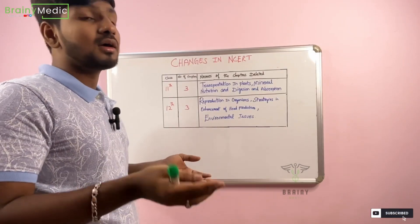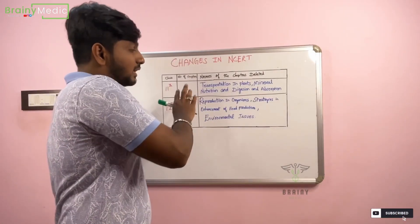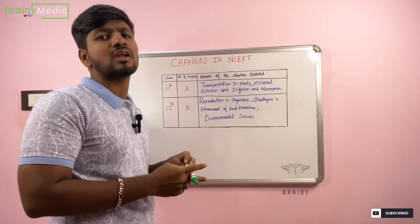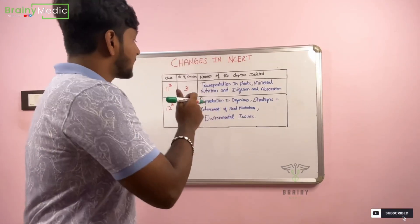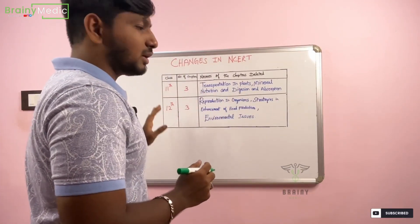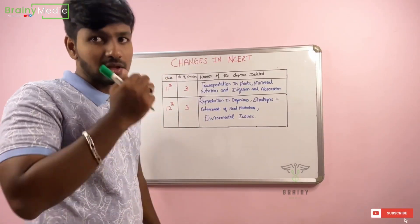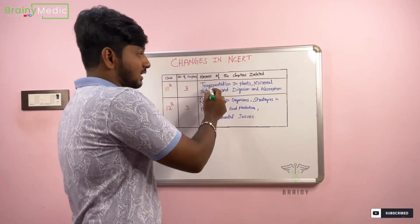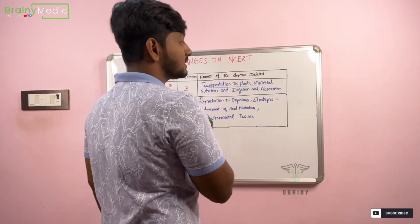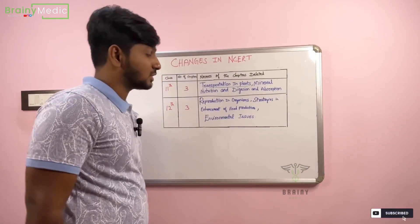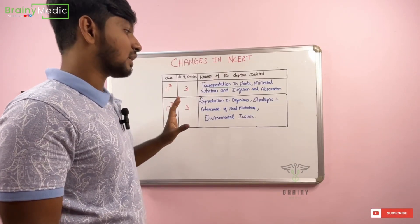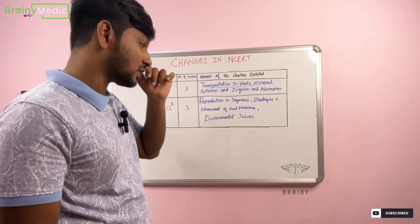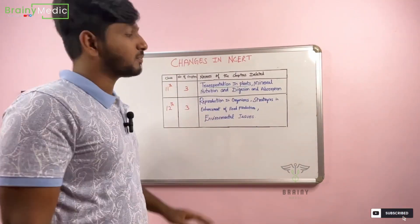Let's talk about the topic. In this video, let's talk about biology. Let's talk about chemistry and physics later. There are three chapters in 11th and 12th NCERT. In 12th NCERT, there are three chapters removed: Reproduction in Organisms, Strategies in Enhancement for Food Production, and part of Environmental Issues.